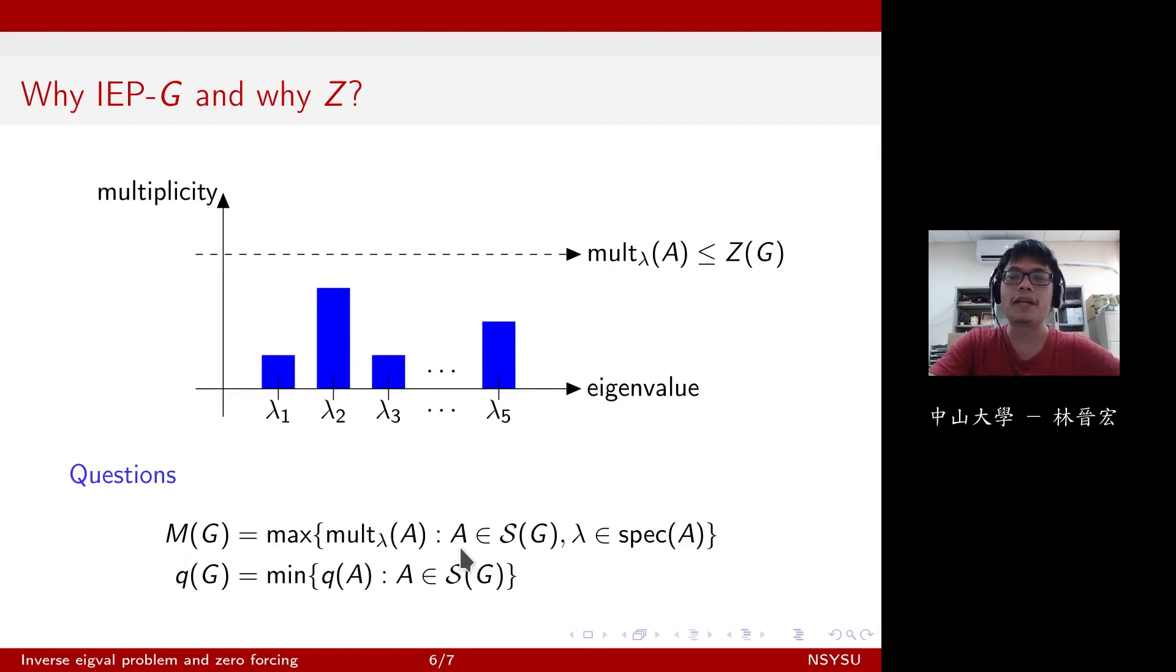So the questions in concern are the following, for example, pick a matrix and pick an eigenvalue, and what are the maximum multiplicities over all such matrices and eigenvalues. And it turns out this M of G is always bounded above by Z of G, which is the zero forcing number, a combinatorial parameter.